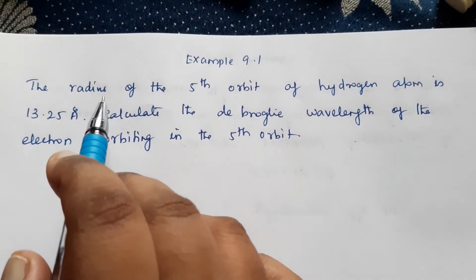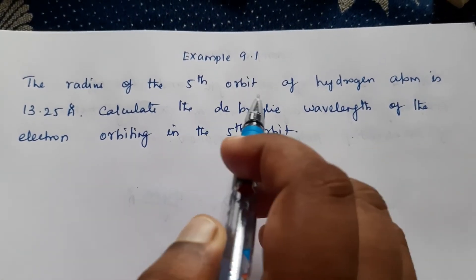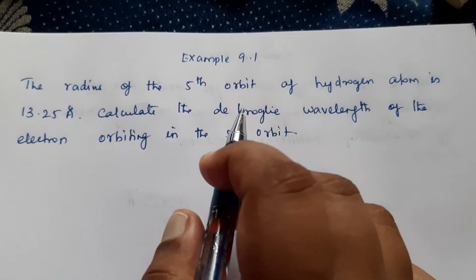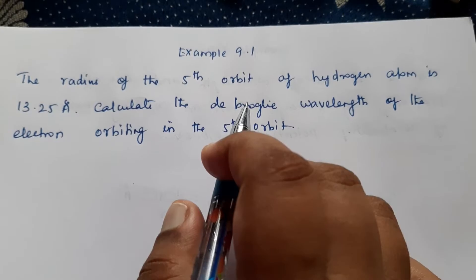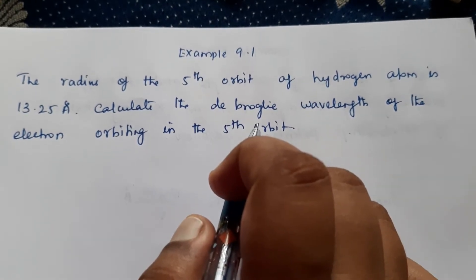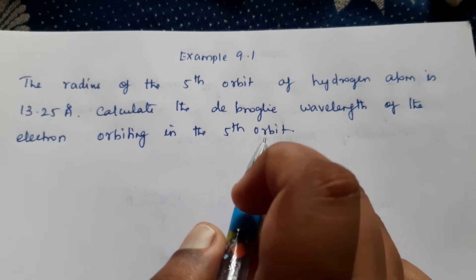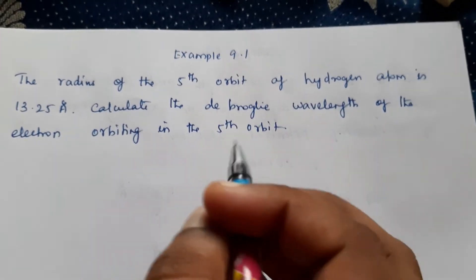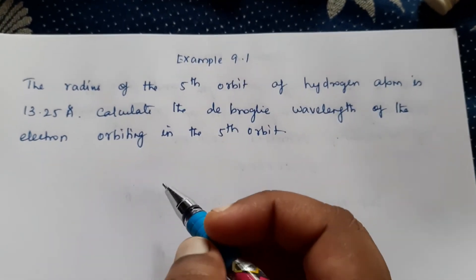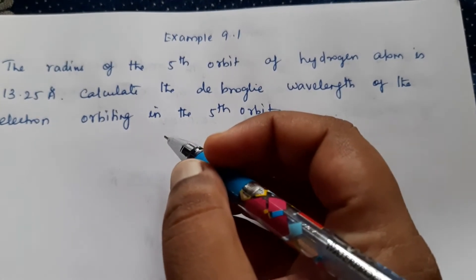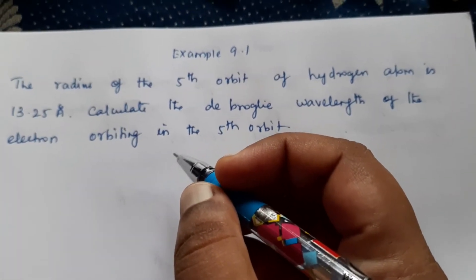Example 9.1: The radius of the fifth orbit of hydrogen atom is 13.25 Angstrom. Calculate the de Broglie wavelength of the electron orbiting in the fifth orbit.